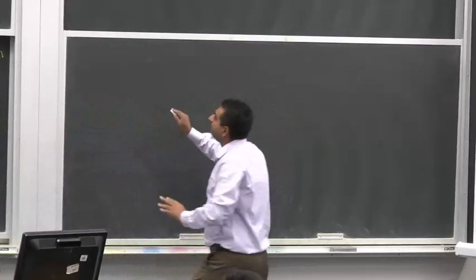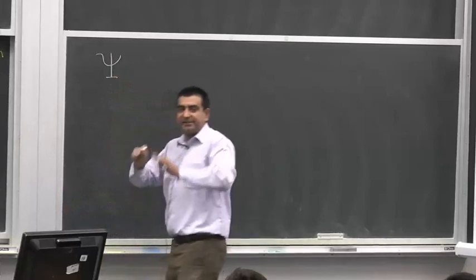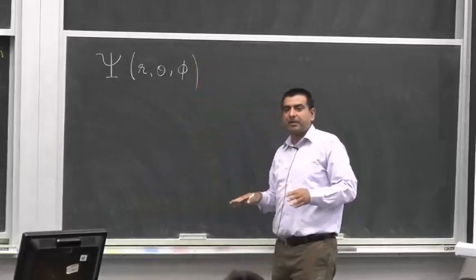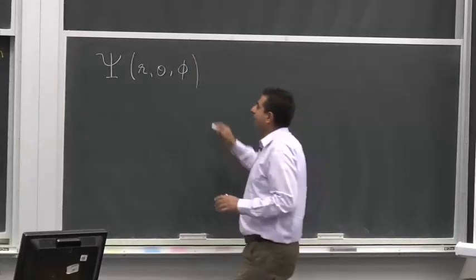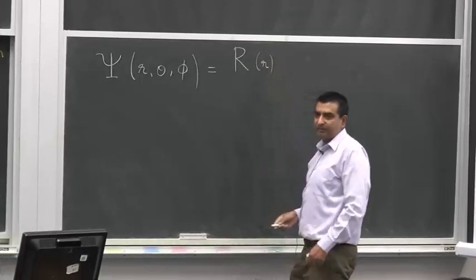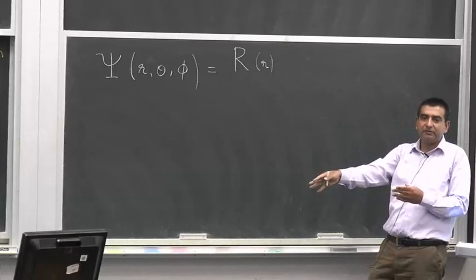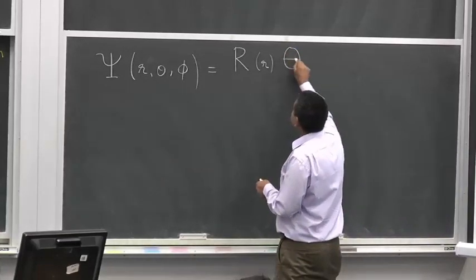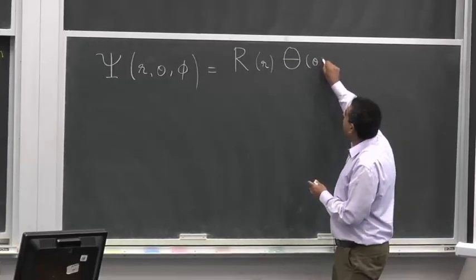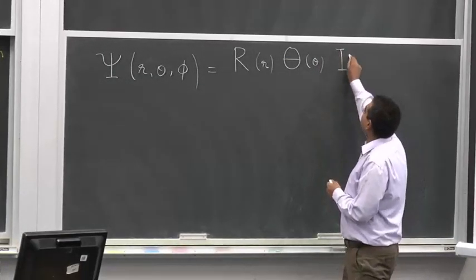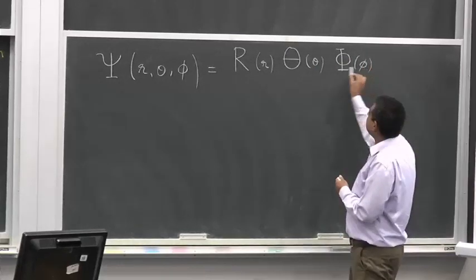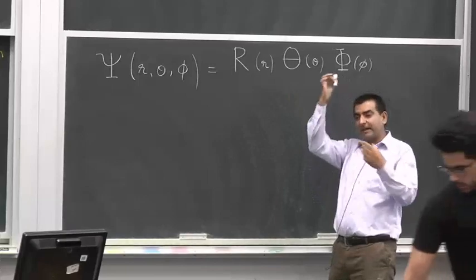So far, what we've seen is that in the hydrogen and single-electron atoms, the wave function — setting aside the time-dependent component for now — is equal to R, which is a function of small r, the distance from the nucleus, times capital Theta, which is the polar part of the wave function depending only on the polar angle theta, times the azimuthal part Phi, which depends only on the azimuthal angle phi. I'm representing the parameters by lowercase variables and the wave functions by their capital counterparts.